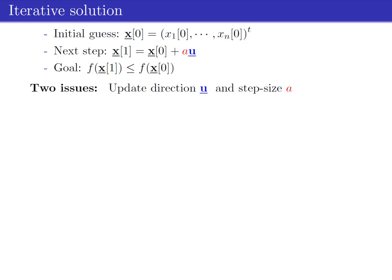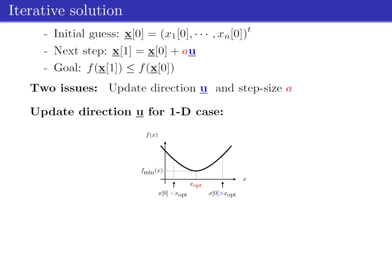In this approach there are two issues: namely, what is the best update direction u to minimize the multivariable function f, and which step size a can we use? Given some initial guess x, we can change this value in many possible directions u. With only one dimension, the function is minimal for x equals x-star, as shown in the figure.